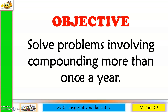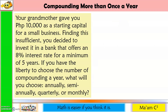Our objective in this lesson is to solve problems involving compounding more than once a year. Your grandmother gave you 10,000 pesos as a starting capital for a small business. Finding this insufficient, you decided to invest it in a bank that offers an 8% interest rate for a minimum of 5 years. If you have the liberty to choose the number of compoundings a year, what will you choose — annually, semi-annually, quarterly, or monthly?